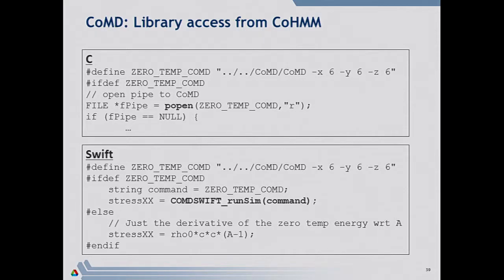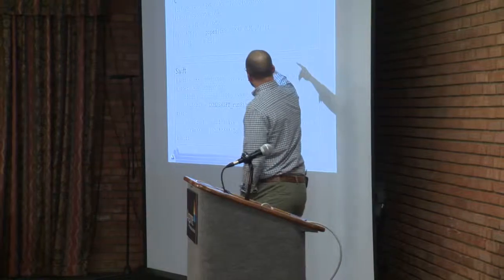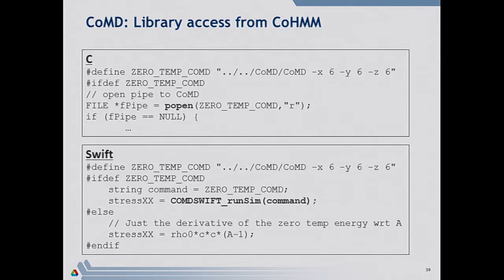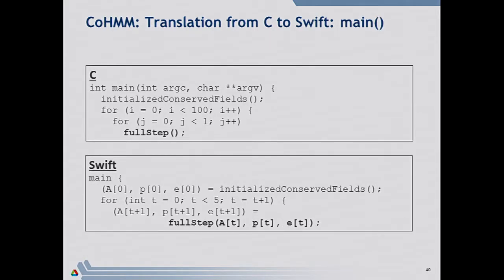Translating from C to Swift, we took the C for loops and turned them into Swift for loops, then applied dataflow on time stepping from time step to time step. Instead of calling CoMD one at a time, we were able to call it hundreds of times concurrently. That gave us a parallelizable Swift routine. Swift also supports the C preprocessor, which makes some of these translations a bit easier. Where they had previously called the CoMD program using popen and read output over a pipe, we called it as a library — going through the program line by line.